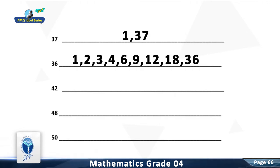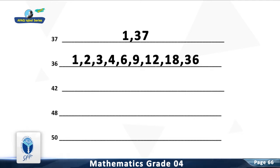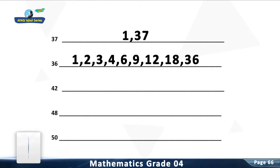Question 7: The factors of 36 are 1, 2, 3, 4, 6, 9, 12, 18, and 36.